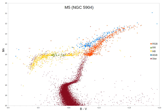The red giant branch, sometimes called the first giant branch, is the portion of the giant branch before helium ignition occurs in the course of stellar evolution. It is a stage that follows the main sequence for low-to-intermediate-mass stars. Red giant branch stars have an inert helium core surrounded by a shell of hydrogen fusing via the CNO cycle. They are K- and M-class stars much larger and more luminous than main-sequence stars of the same temperature.